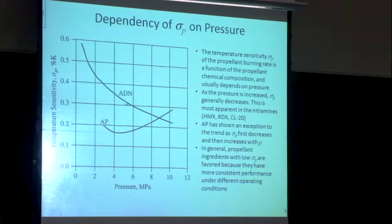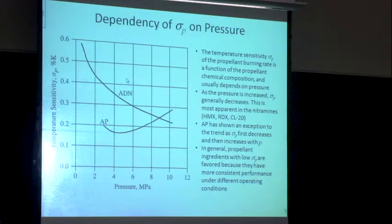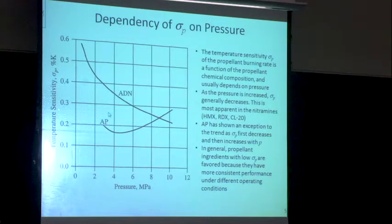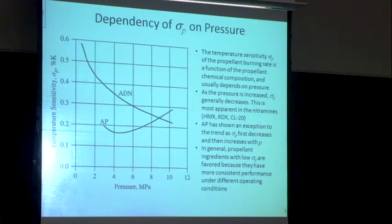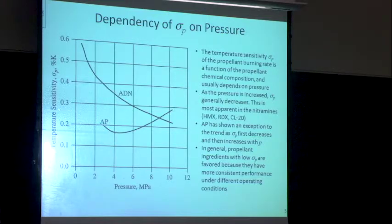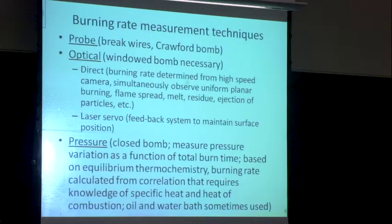Some examples of how temperature sensitivity changes with pressure — it's also a function of pressure. For ammonium dinitrimine, most propellants have temperature sensitivities that are largest at lower pressures and fall off at higher pressures. Ammonium perchlorate is an anomaly — it initially decreases and then starts increasing at higher pressures. The desirable characteristic would be one that's nearly constant across the pressure range, and obviously the lower the better.